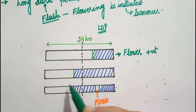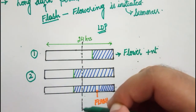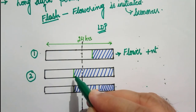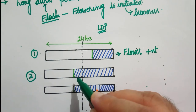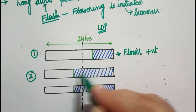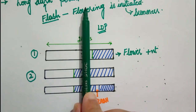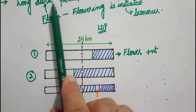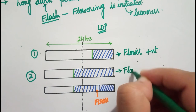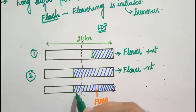In the second case, the critical dark period is shown again, but the nights are greater than the critical dark period. Since they flower only when the night is shorter than the critical dark period, and here the night is greater than the critical dark period, flowering does not happen — flowering is absent.